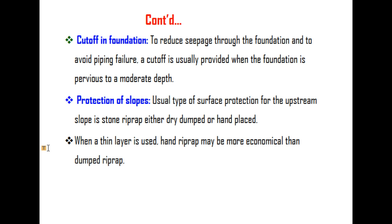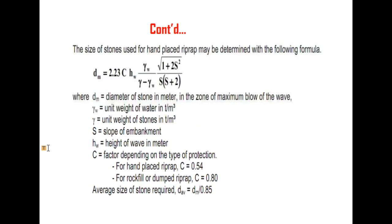Protection of slopes. The usual type of surface protection for the upstream slope is stone riprap, either dry-dumped or hand-placed. When a filter is used, hand-placed riprap may be more economical than dumped riprap. The size of riprap stones may be determined using the following formula, referred to as the T formula.